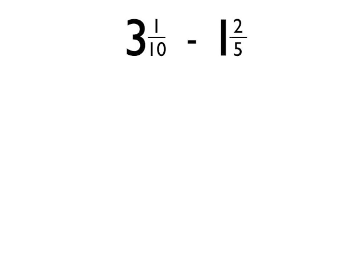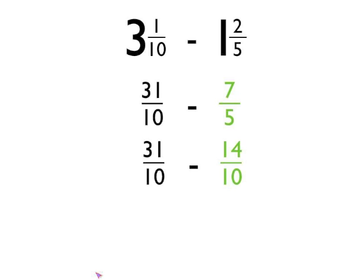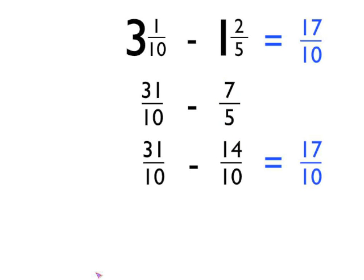Let's finish up with a subtraction. We'll do three and one-tenth subtract one and two-fifths. First step, exactly the same: convert all the mixed numbers to improper fractions. Three and one-tenth is thirty-one-tenths, and one and two-fifths is seven-fifths. So we do thirty-one-tenths subtract seven-fifths. We need to make the denominators the same, so I'll use the equivalent fraction fourteen-tenths for seven-fifths. Thirty-one-tenths subtract fourteen-tenths gives us seventeen-tenths. You could convert that to a mixed number — that's one and seven-tenths — but seventeen-tenths is the answer.